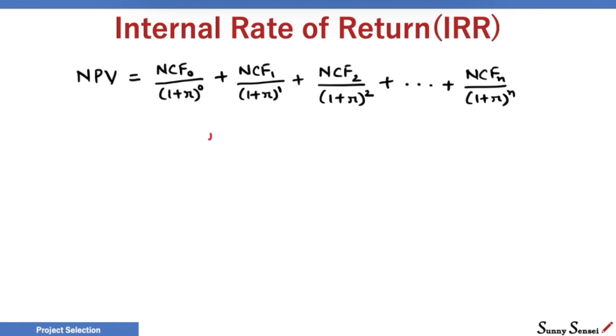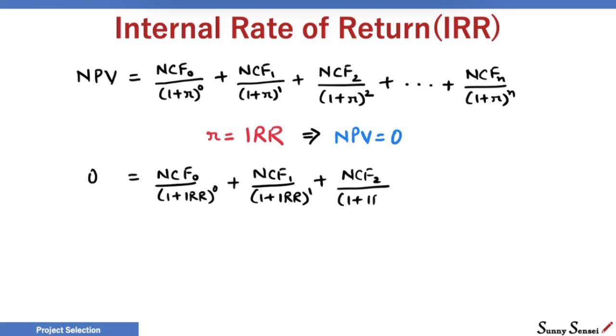IRR is actually the inherent rate of return for a set of cash flows. When rate of return equals IRR, the net present value is zero. We replace R with IRR and NPV with 0. If we know the net cash flows, we can use this equation to calculate IRR. Not an easy equation to solve. Don't worry, the PMP exam will never ask you to solve for IRR.